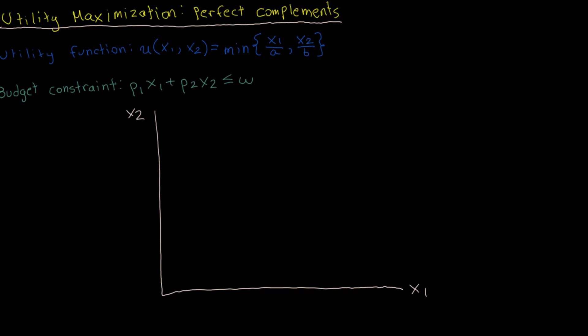First, I'm going to cover the utility function and the budget constraint. The utility function here has the form of a Leontief utility function, and here I'm dealing with two goods, good one and good two. This function takes the minimum of x1 over a and x2 over b, where a and b are parameters. The consumer likes to consume a units of good one for every b units of good two.